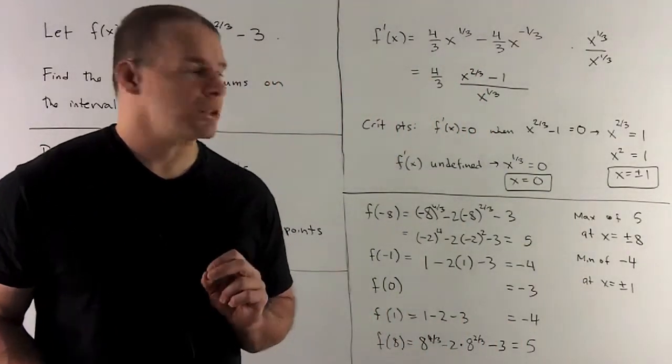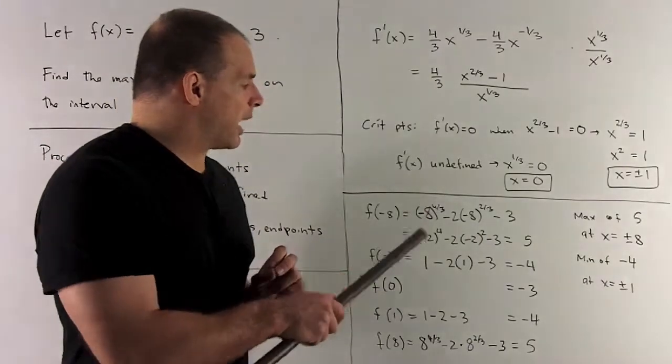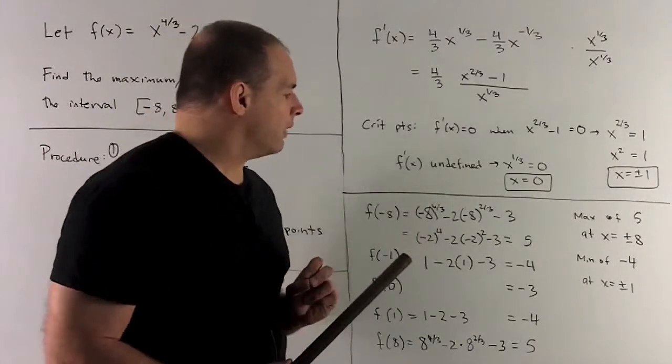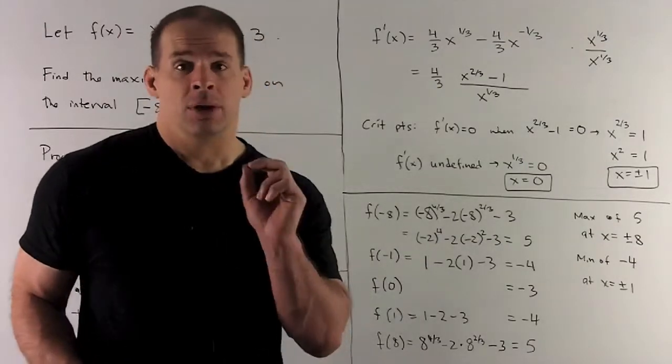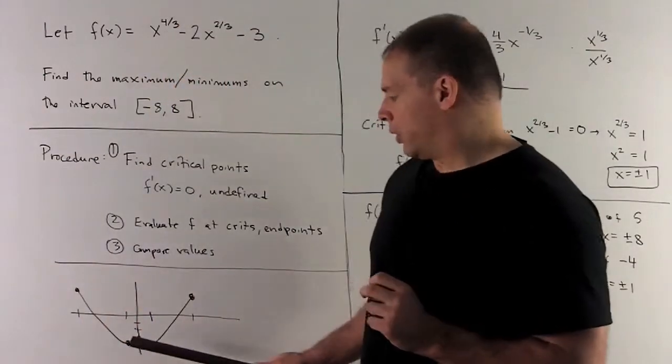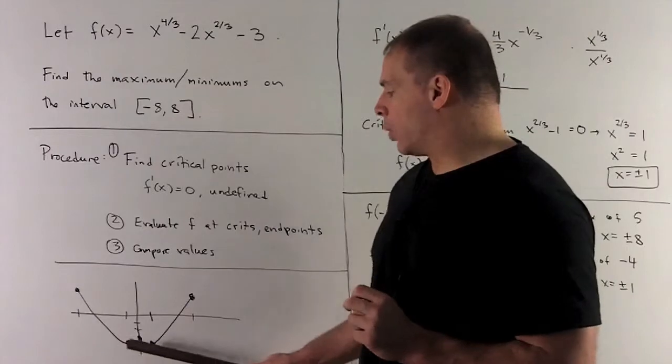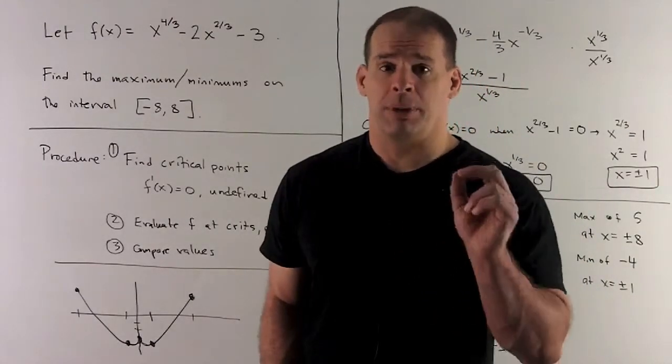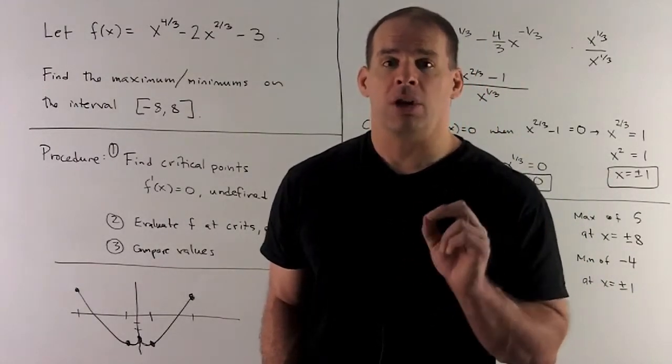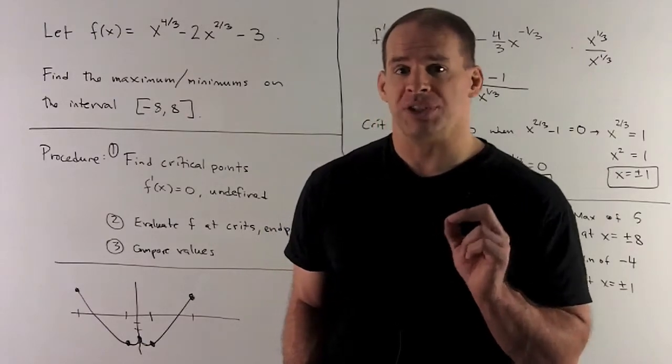How about the minimums? We see our minimums are going to occur at ±1 with a minimum value of -4. Take a look at the graph. We note our minimums are happening where we have these horizontal tangent lines at ±1, and we already noted that that's where the derivative is equal to 0.